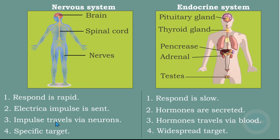The nervous system targets a specific organ like an effector. The endocrine system targets a wide range of organs, including cells, tissues, and muscles. Make sure you understand the difference between these two concepts.